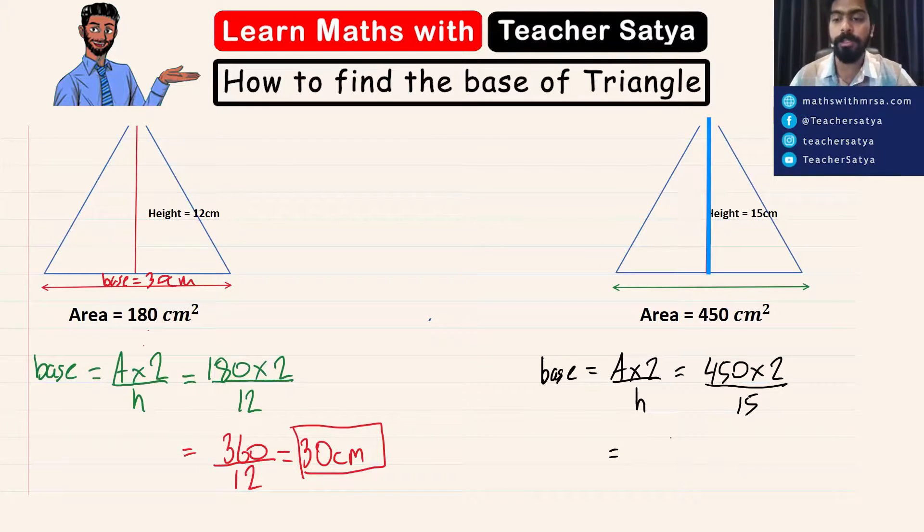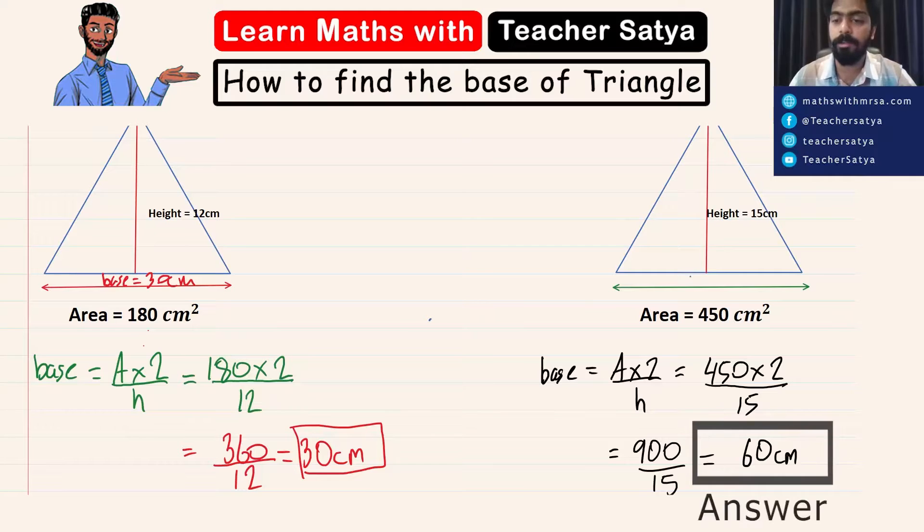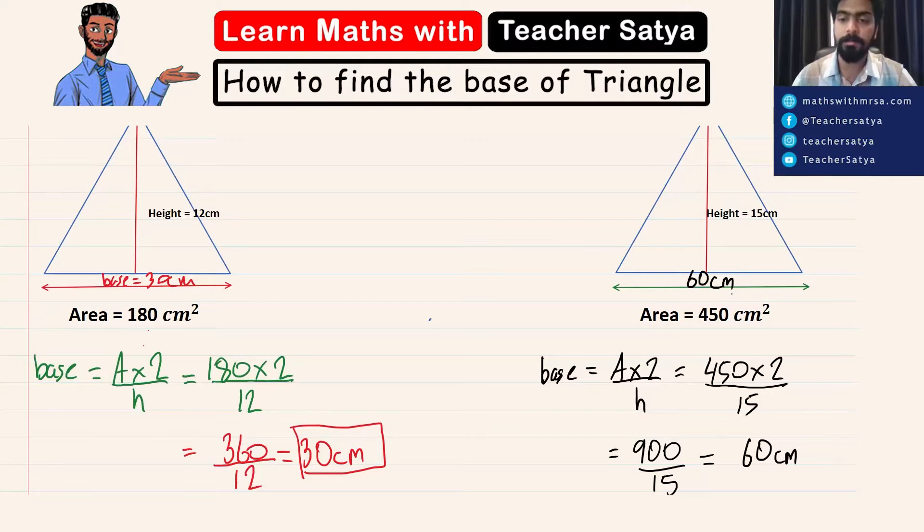Now 450 times 2 will give us 900 divided by 15. Therefore, 900 divided by 15 would give us 60 centimeters. Therefore, the base of this triangle would be 60 centimeters.